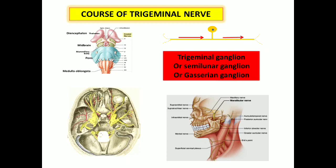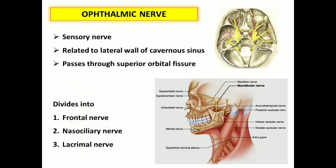The trigeminal ganglion is also called the semilunar ganglion or Gasserian ganglion. It contains a rich number of pseudo-unipolar neurons. The first division to discuss in detail is the ophthalmic nerve, which is the first division of the trigeminal nerve.